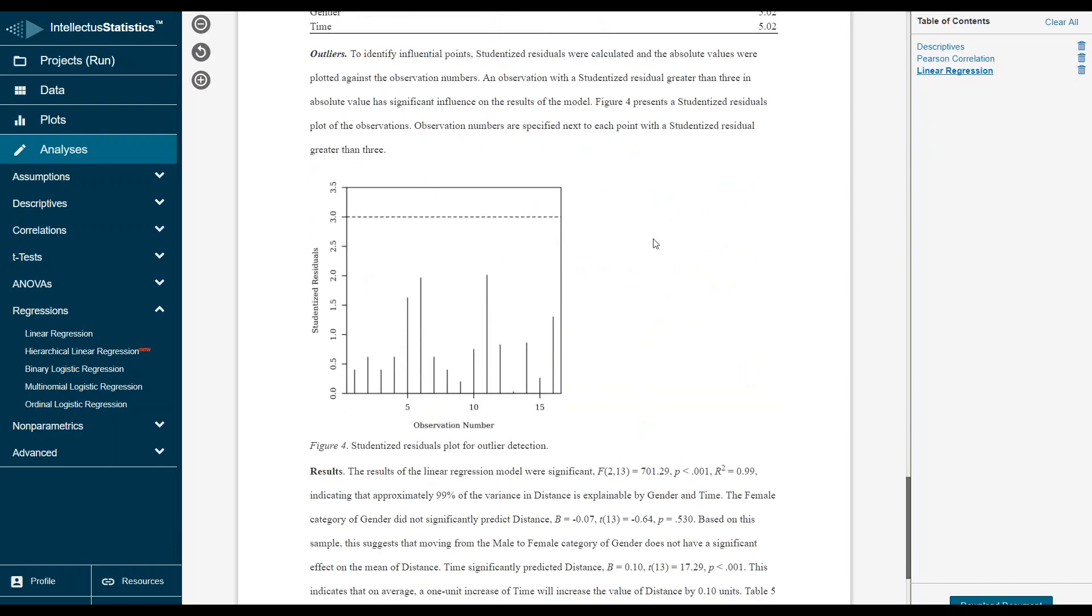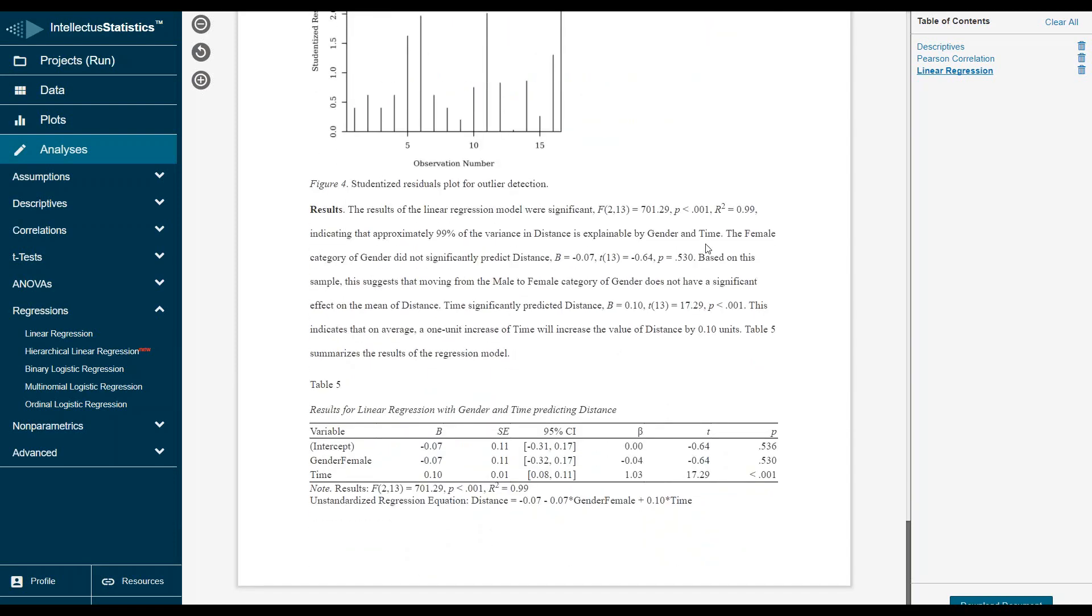Next, look for outliers. Are any of these outliers above 3.0? None of them are. So so far I would say overall the assumptions are met here. Then we get into the results. The results of the linear regression were significant.